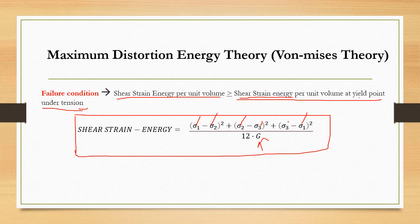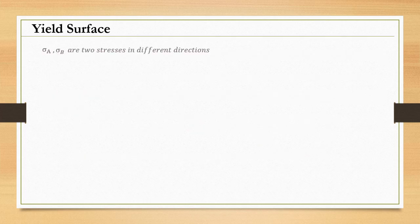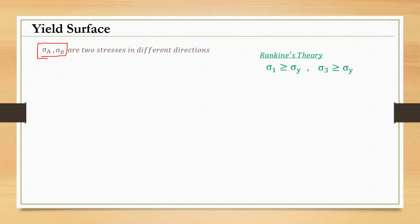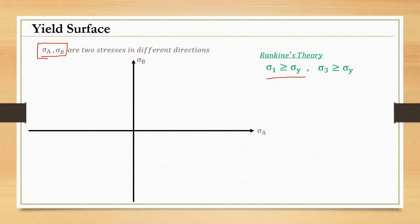Let's talk about yield surfaces. A yield surface gives you an idea of which region the material will fail in and which region it is safe. We will consider two stresses, Sigma_A and Sigma_B — without specifying which is greater or which is positive — and we will plot the yield surfaces for all three theories: Rankine, Tresca, and Von Mises. For Rankine, failure occurs when Sigma_1 ≥ Sigma_Y.